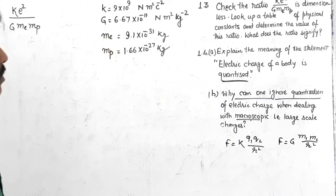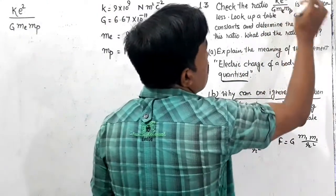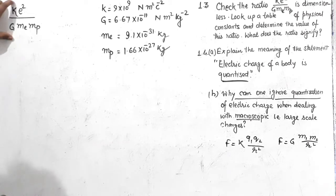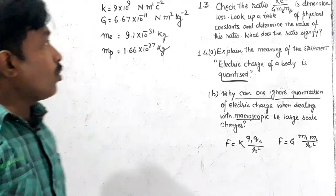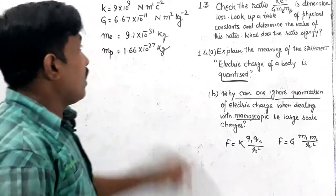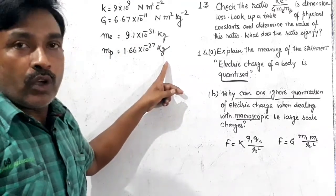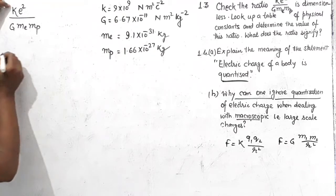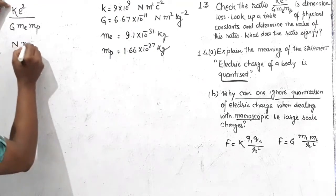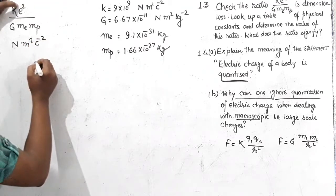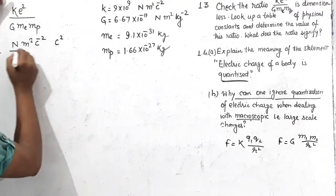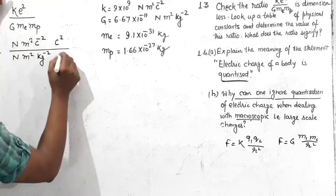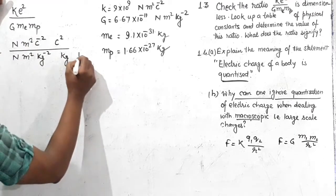Now we need to show in the first part that this ratio is dimensionless. To find dimensions, we can directly use the units since dimensions are directly connected to units. If no unit remains after substitution, the physical quantity is dimensionless. So let us write the unit of K — that is Newton·meter²·Coulomb⁻². Then e² becomes Coulomb², and G has unit Newton·meter²·kg⁻².